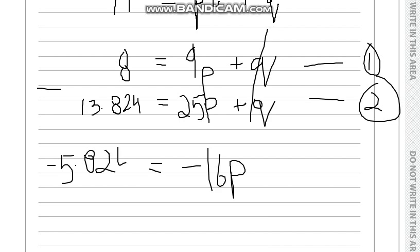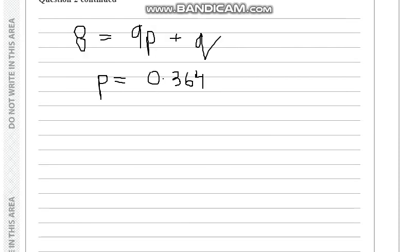Now what we can do is remove these minus signs and divide 5.824 by 16, which will give us p equal to 0.364, which you can write as 0.36.